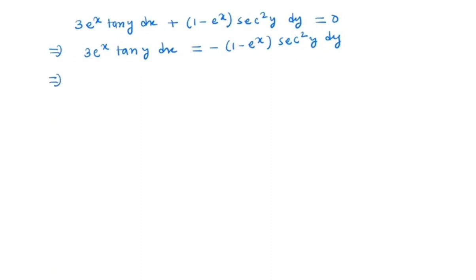Now try to separate x and y. So we have (3e^x dx)/(1 - e^x) is equal to -(sec^2 y dy)/tan y.